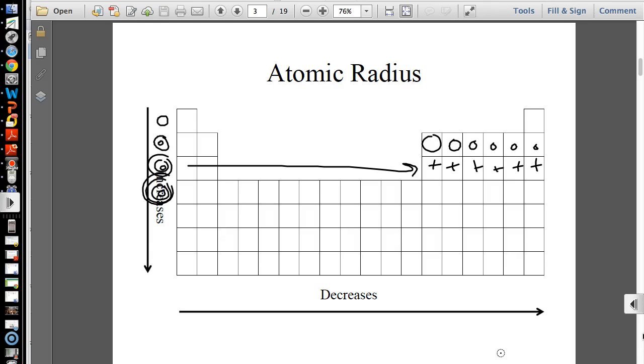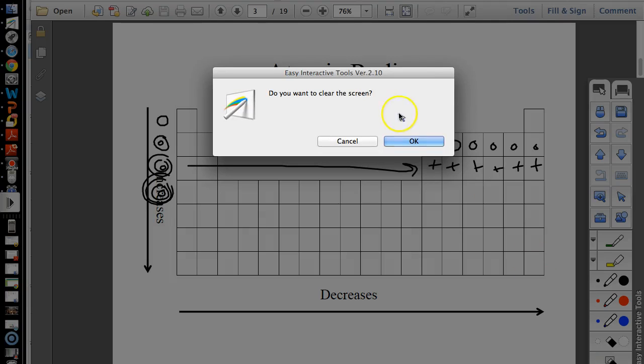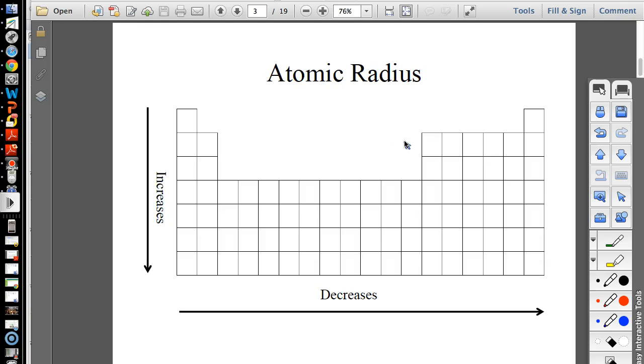So, that's how your atomic radius should increase as you go down and decrease as you go across. Everybody understands this, the decrease as you go across is something that in the past I had noticed people struggled with. That's why we did the Smarties, and then as we added the protons, we kind of pulled the outer shell in. And you guys did well with that yesterday. So, that's what you should have had on your do now.